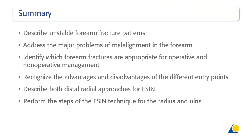You should now be able to: describe unstable forearm fracture patterns; address the major problems of malalignment in the forearm; identify which forearm fractures are appropriate for operative and non-operative management; recognize the advantages and disadvantages of the different entry points; and describe both distal radial approaches for Essin and perform the steps of the Essin technique for the radius and ulna.